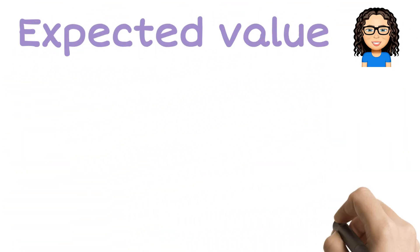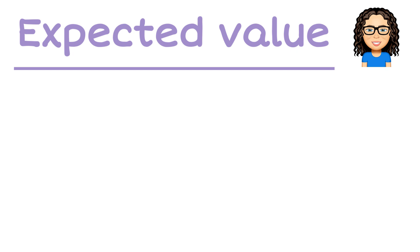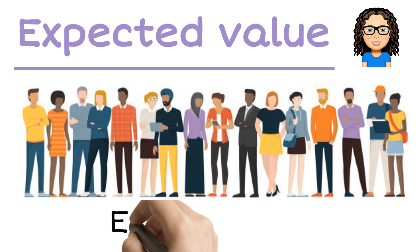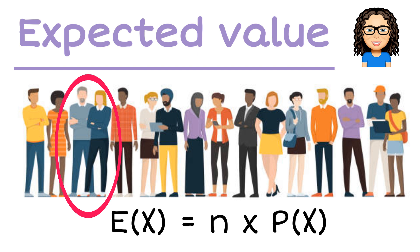Expected value — this is the idea that we have a group of people that we're interested in, a sample size, and from within that sample size we want to know how many do we expect to meet a particular criteria.